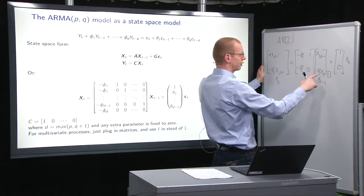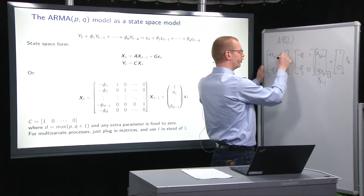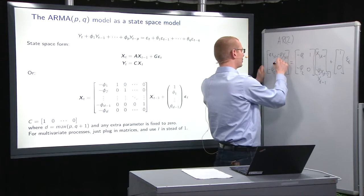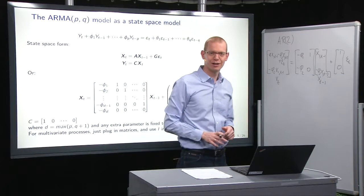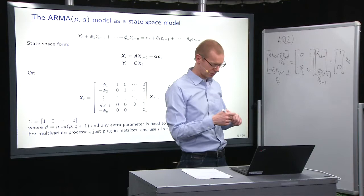then we have the 1 there times what we have down here, minus phi_2 x_1,_{t-2}, and then we have plus epsilon_t.